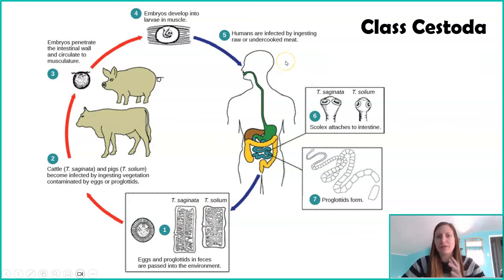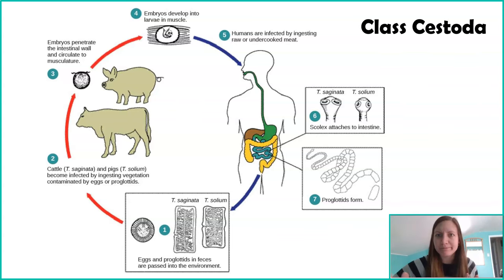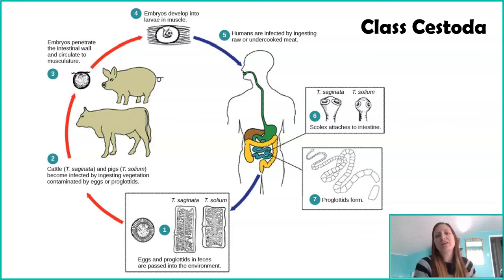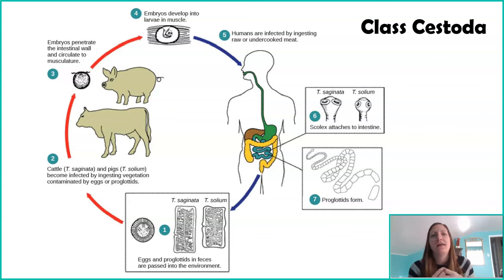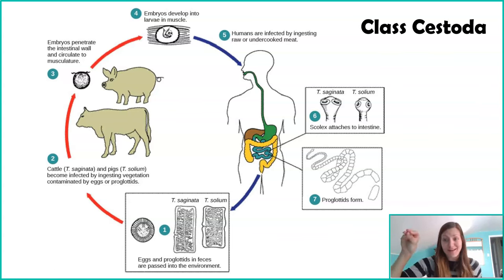We'll start with the adult tapeworm in the intestines — probably the part of the life cycle you're most familiar with. Tapeworms will attach to our small intestine; the scolex attaches to the lining of the small intestine and essentially takes nutrients out of our food to help with its own processes, namely making eggs. You've got the scolex hanging on to the intestinal wall, and then that whole long tail of proglottids with the most mature proglottids at the very end. This is in our small intestine — on the way to becoming poop.